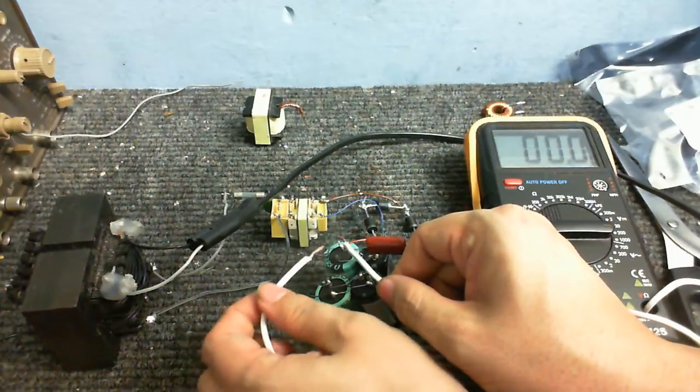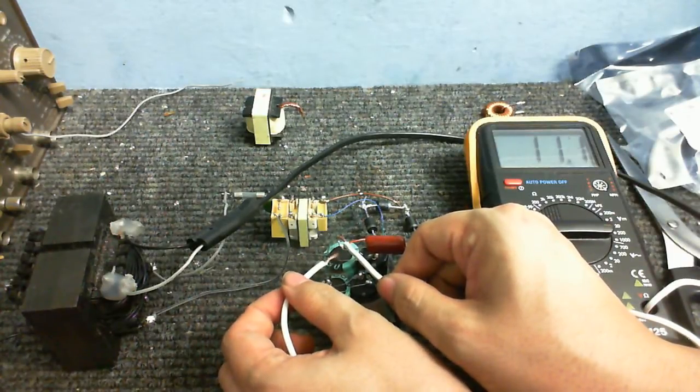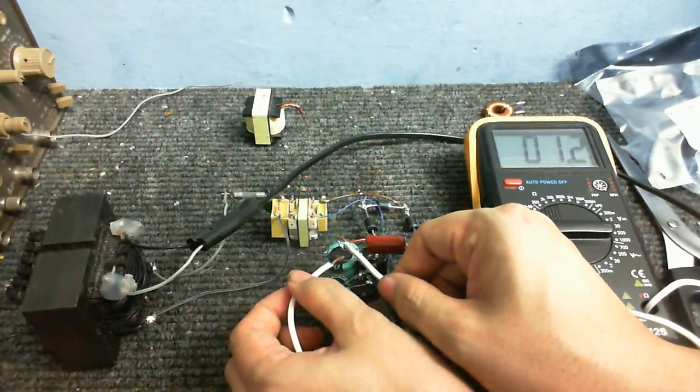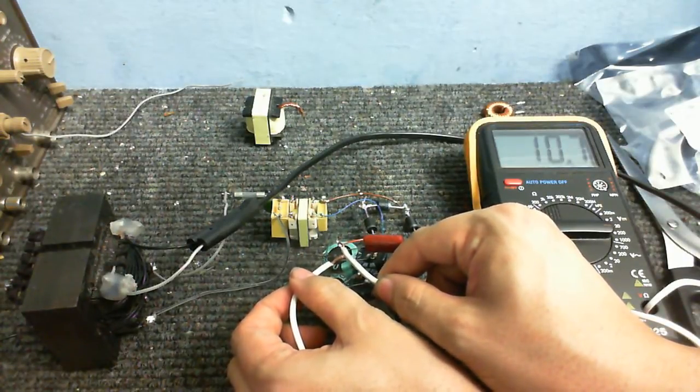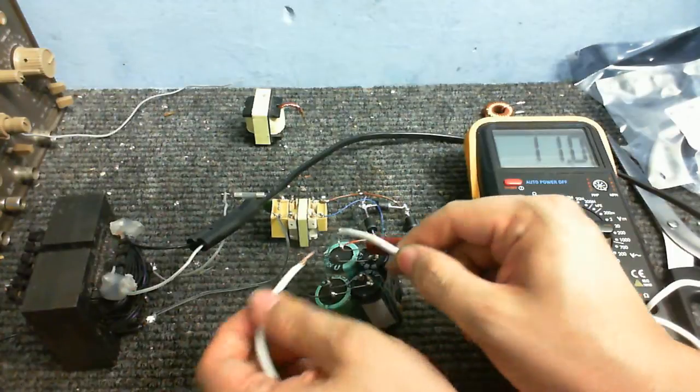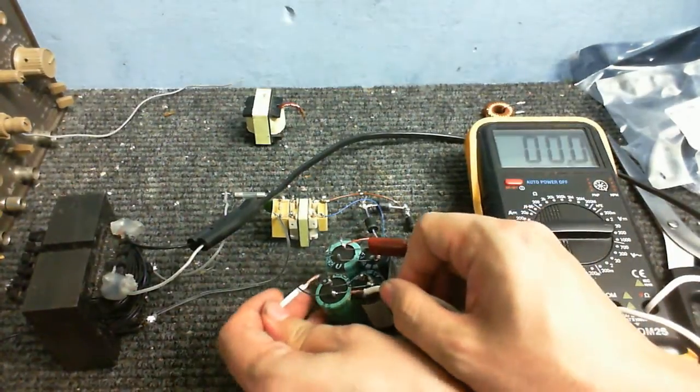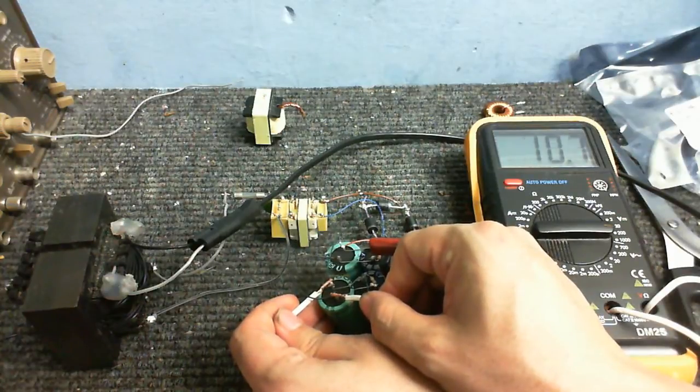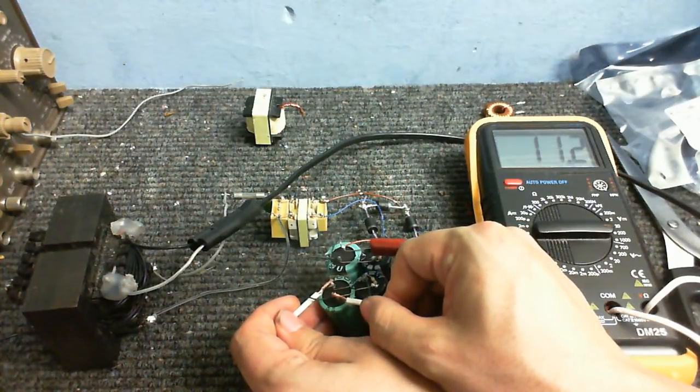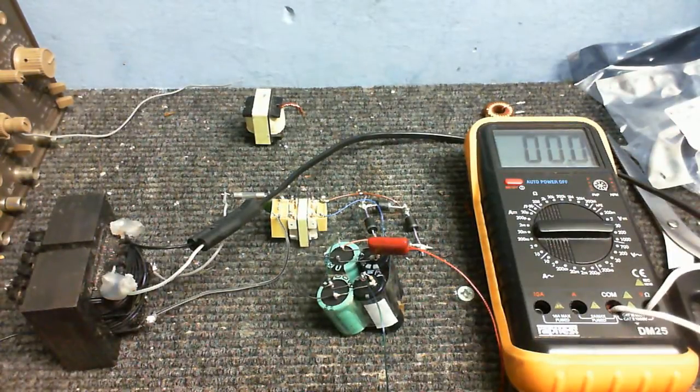Alright, let's test the voltage across this capacitor. It should be about half that. Okay, we've got 11.1 across that capacitor. Let's see what we've got across this one. About 11.2, so that's looking pretty good.